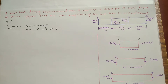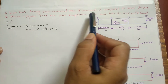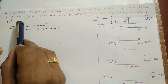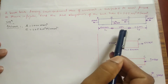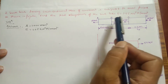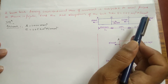Hi friends, today I am going to solve a problem on a bar which is subjected to many axial forces. A brass bar having cross-sectional area of 1000 mm² is subjected to axial forces as shown in the figure. We need to find out the total elongation of the bar. Take E equal to 1.05 × 10⁵ N/mm².